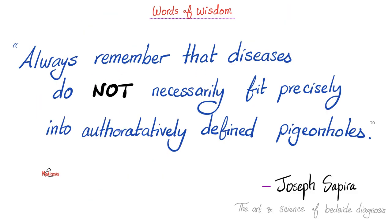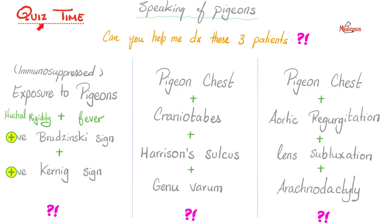Quiz time! Can you diagnose these three patients? First patient: immunosuppressed, exposure to pigeons, nuchal rigidity, fever, photophobia, positive Brudzinski and Kernig signs — what's the diagnosis? Second patient: pigeon chest, craniotabes, Harrison's sulcus, genu varum — this is a child — what's the diagnosis? Third patient: pigeon chest, aortic regurgitation, lens subluxation, arachnodactyly — what's the most likely diagnosis? Leave your answers in the comments.